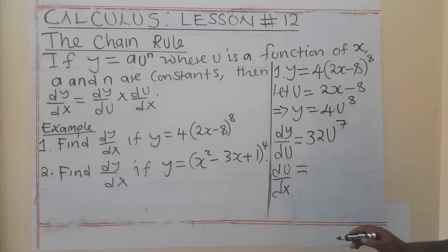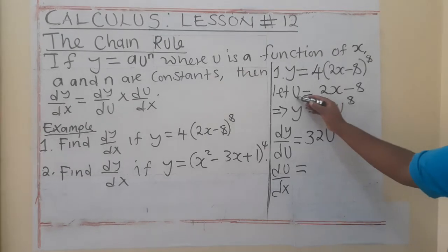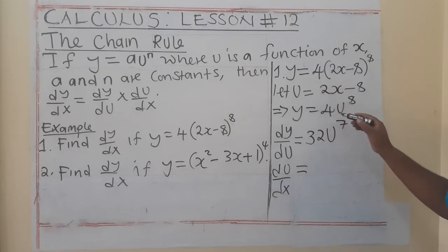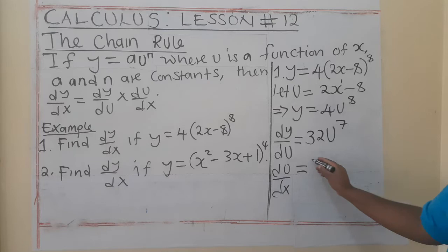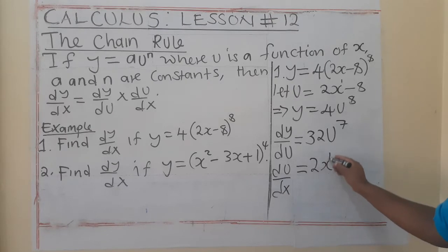So, du/dx. What are we saying? We are differentiating u with respect to x. So, here, it's like this power 1. So, 1 by 2, you have got 2x, 1 minus 1. Oh, sorry. Because this would be 0. 1 minus 1 would be 0.